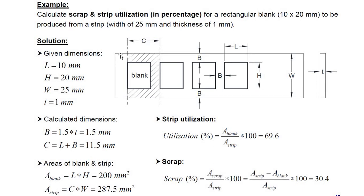As far as total area of the blank, if we try to calculate the area of blank, it would be length into height. Length is 10, height is 20. So per blank you have 200 millimeters square area.